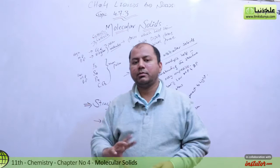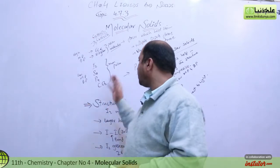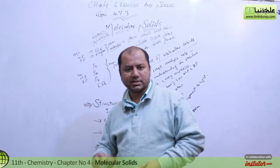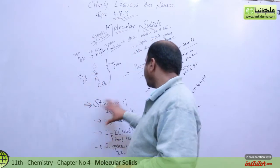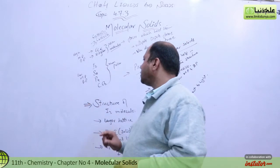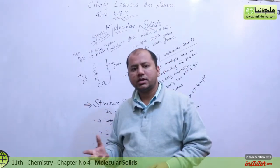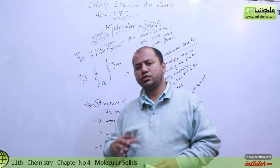But one thing is that their melting and boiling points, as compared to non-polar molecules, are slightly higher. And theirs is lower, like the iodine molecule. We'll talk about its structure, and sulfur molecules in monoclinic and rhombic crystals.